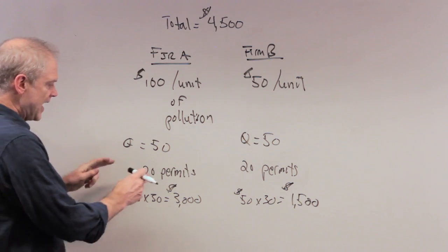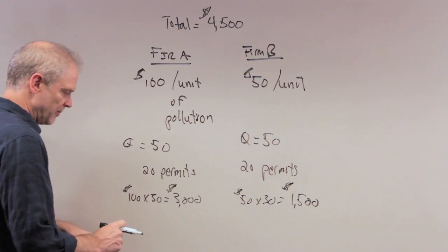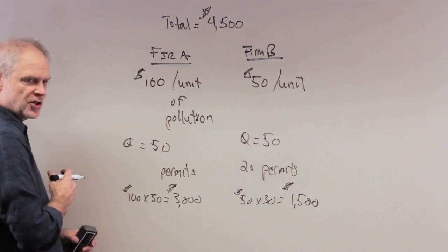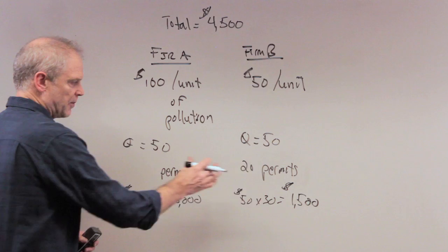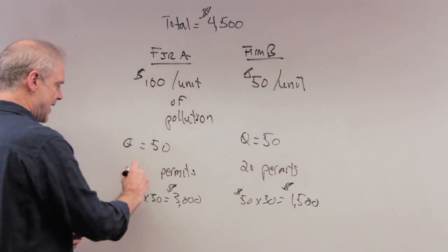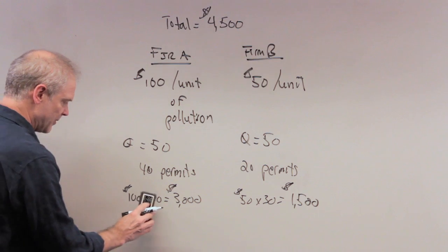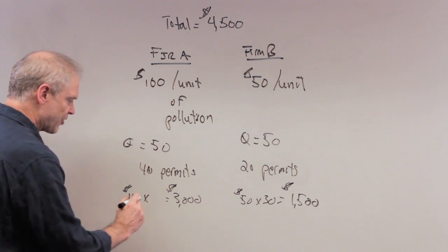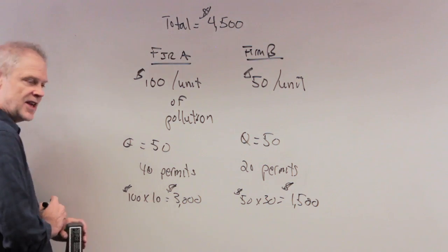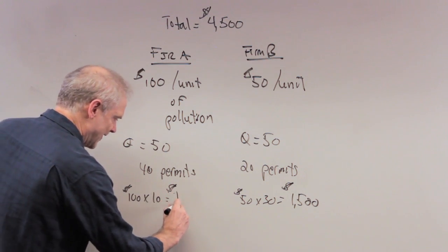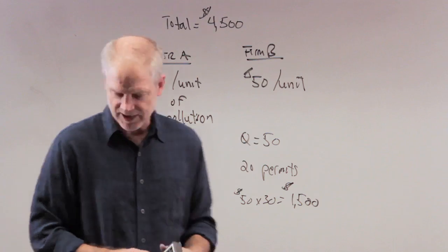And now firm A has permits, has 40 permits. So I'm going to change this now. Everyone see what I've done? Firm A has just purchased away the permits from firm B, and now they have 40 permits. So now they only have to get rid of 10 permits themselves. So instead of having 30 permits to get rid of, they get rid of 10. That's 10 times $100 each. That's $1,000. I'll say it again, it's a little bit complicated.